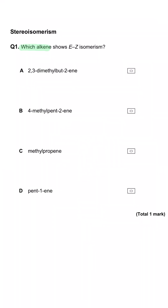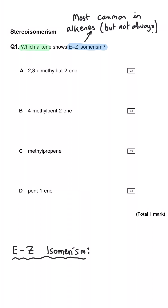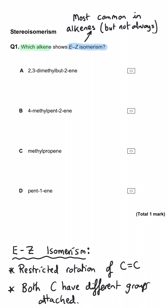Which alkene shows EZ isomerism? EZ isomerism comes about in alkenes because of restricted rotation about the double bond, and then if both of those carbon atoms that have the double bond have two different groups each, then there will be EZ isomerism. So we need to look through each of the four options.